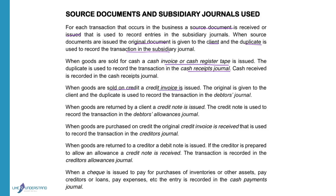When goods are sold on credit, a credit invoice is issued to the debtors. The debtors are the people who owe money to the business. When goods are sold to the debtors, the original invoice is given to the debtor and the duplicate is used to record the transaction in the debtors journal.